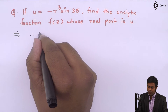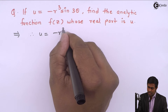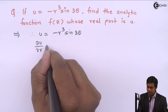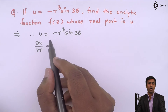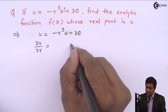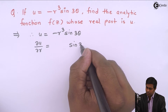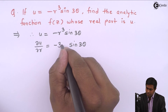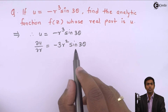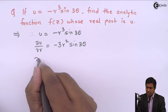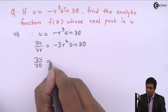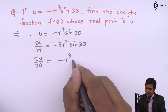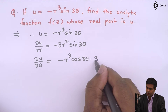U is equal to minus R cubed sine(3θ). To find ∂U/∂R, we differentiate U with respect to R partially. Sine(3θ) stays as it is, and the derivative of R cubed is 3R squared, so we get ∂U/∂R equal to minus 3R squared sine(3θ). Similarly, ∂U/∂θ is the partial differentiation with respect to θ. Minus R cubed stays as it is, and sine(3θ) becomes cos(3θ) times 3, giving minus 3R cubed cos(3θ).